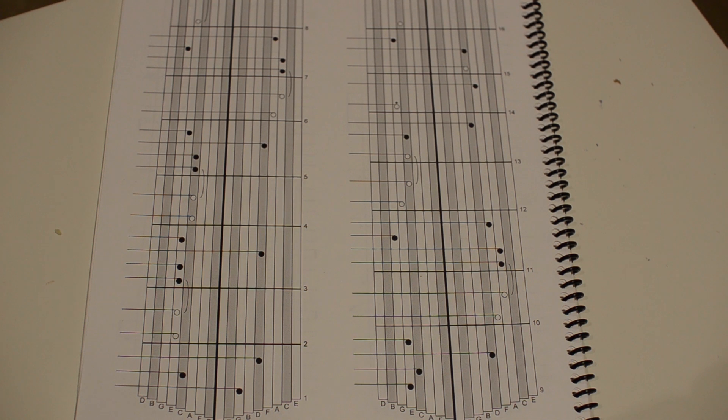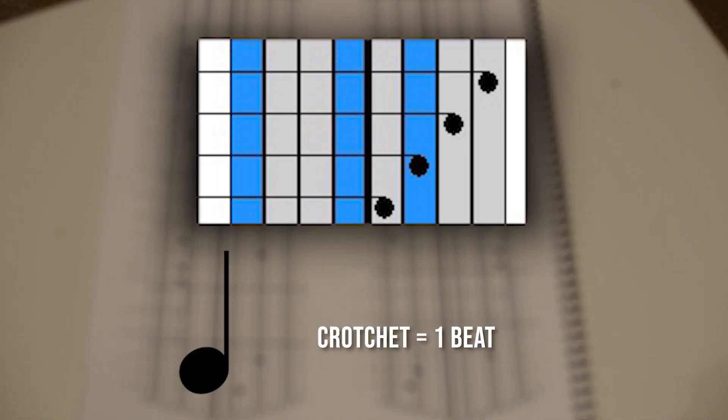Now, to read this Calimba tablature, it is important to understand some basic music notation that is generally used for most instruments. This note is known as a crotchet, and it lasts for one beat.